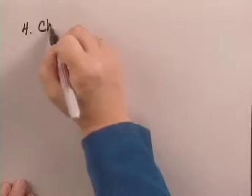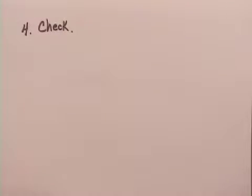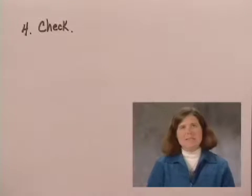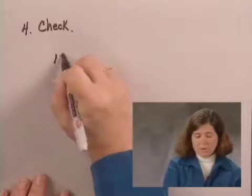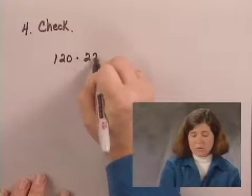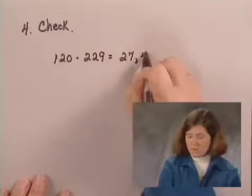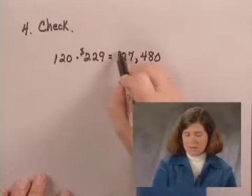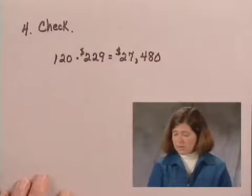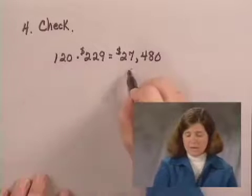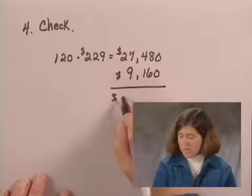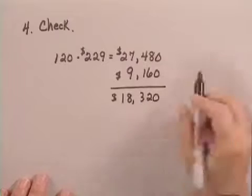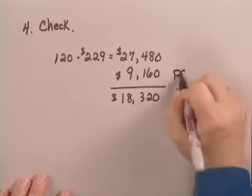Now to check the answer, we can approach the problem a little bit differently. We can look at how much she would have paid back in 10 years. In 10 years she would have paid 120 payments times $229 a month or $27,480. That's the total she had to pay back. She's already paid $9,160. If you subtract, she has left to pay $18,320.